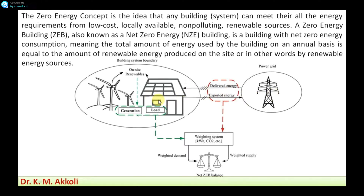Whenever the energy is not sufficient — particularly in the rainy season, we are not going to get solar energy — during that time the energy from the grid can be taken. The total energy produced from the system is equal to whatever energy is required for that building. That is called the zero energy concept, or a net zero energy building. The weighted demand and weighted supply are both equal, and we call that a net zero energy balance.